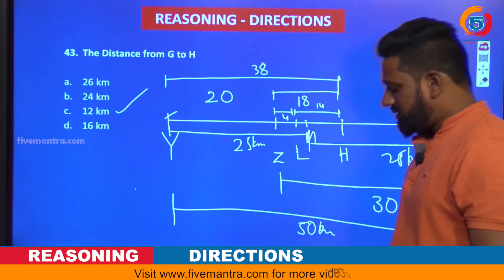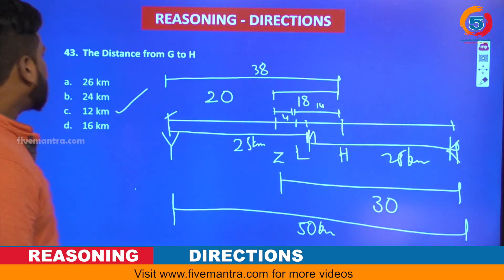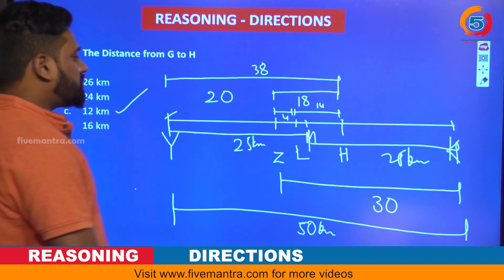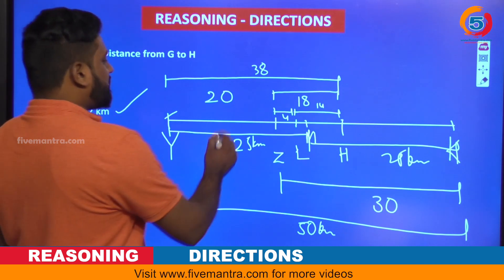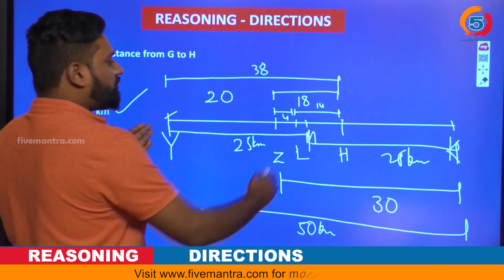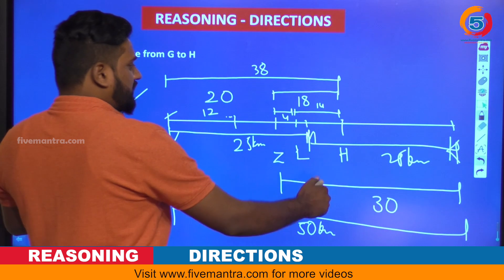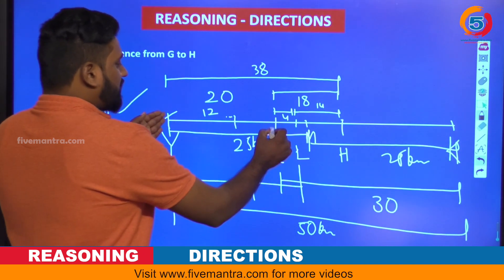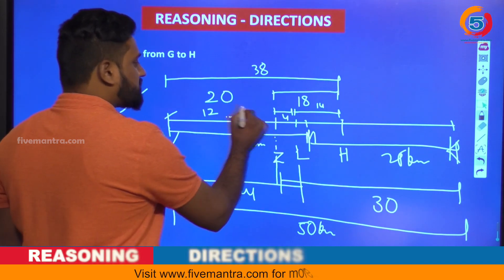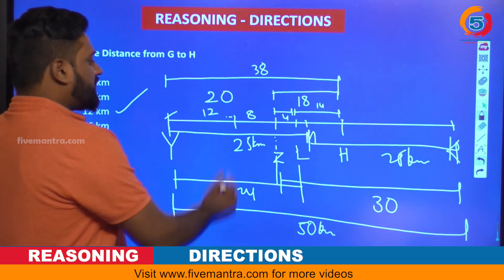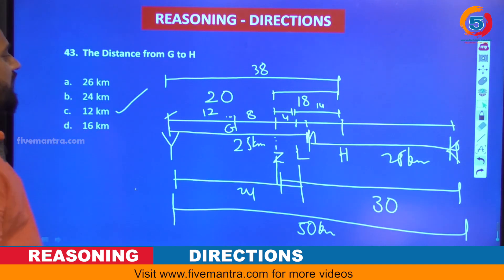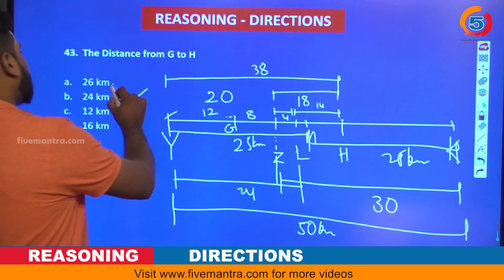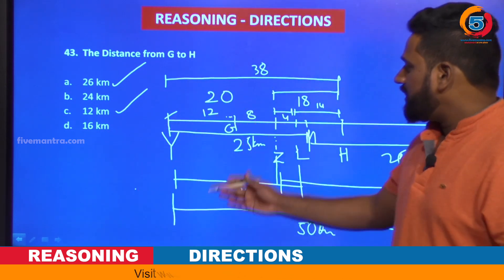The distance from G to H is being asked. This is simple — if you observe G to H, you find the distance as 26 kilometers. G is taken as exactly midway between L and Y. L to Y is 24 kilometers total, so the midpoint gives 12. Out of 20 (Y to Z), from G it is 8. So G to H is 8 plus 18 equals 26 kilometers — that is the first option. No need to calculate anything extra; it is directly from the diagram.